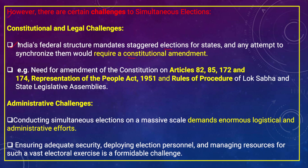India's multi-party system means there is often no clear majority, and issues like horse-trading, corruption among political parties and candidates, and defections despite the anti-defection law make conducting simultaneous elections more complicated. Constitutional amendments are needed specifically to Articles 82, 85, 172, and 174 of the Indian Constitution. Major legislations requiring amendment include the Representation of People Act 1951, and the rules of procedure of Lok Sabha and state legislative assemblies.